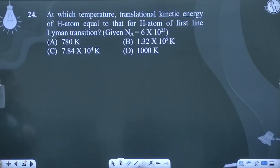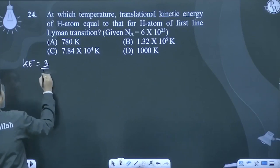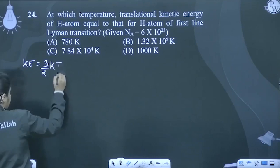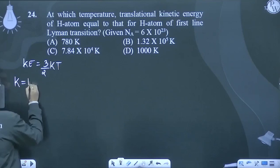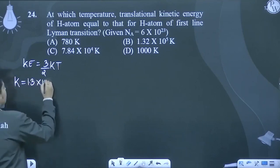Now, translational kinetic energy calculate. Translational kinetic energy, which is 3 by 2 kT. This is discussed in thermodynamics. Now we have a question, so we should know that kinetic energy is 3 by 2 kT, where k is Boltzmann constant which value is 1.3 into 10 to the power minus 23.